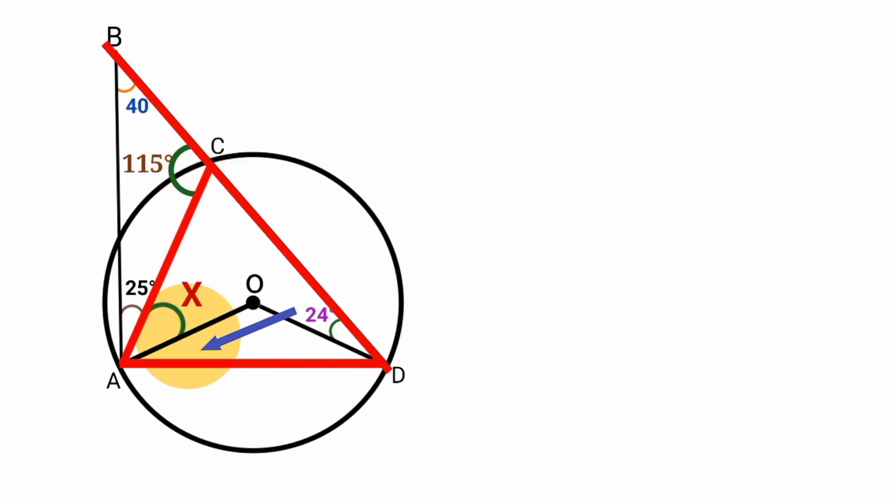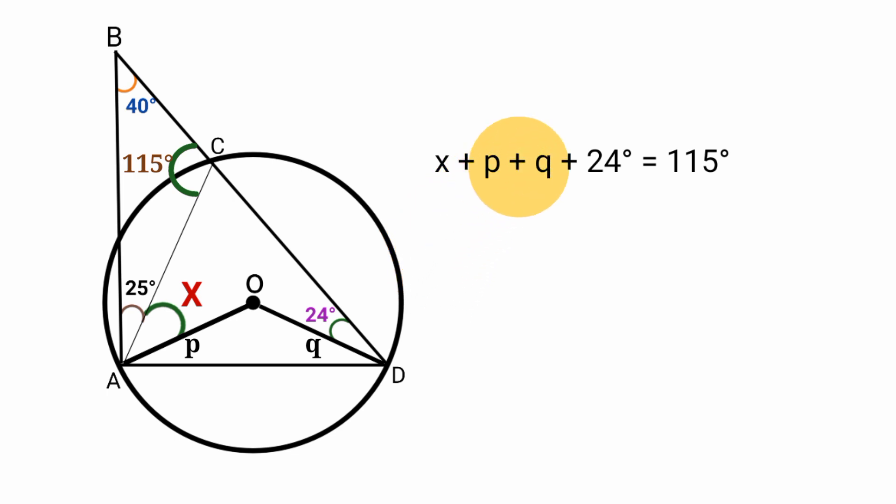So we can label this angle P and this one Q and form an equation. X plus P plus Q plus 24 degree is equal to 115, because this angle here is X and P while this one is 24 and Q. But what are the sizes of angle P and angle Q? If you look, since both line AO and line OD are both radiuses of the circle, that means line AO is equal to line OD because the radius of the circle at all points is equal. And hence, triangle ADO is an isosceles triangle, meaning angle P here is equal to angle Q.